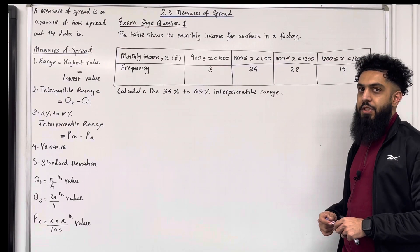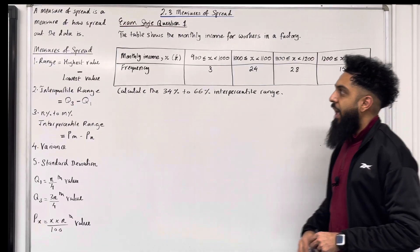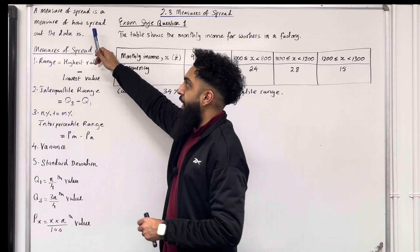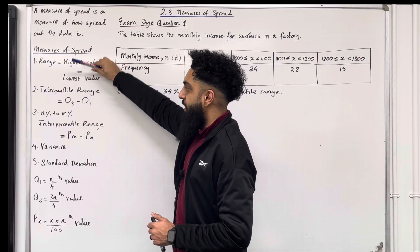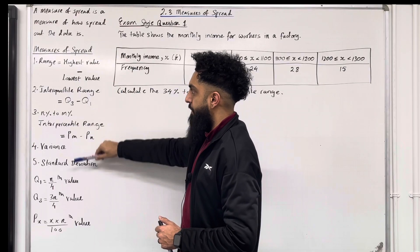Let's go through the definition of a measure of spread. A measure of spread is a measure of how spread out the data is. Here are some examples of measures of spread.